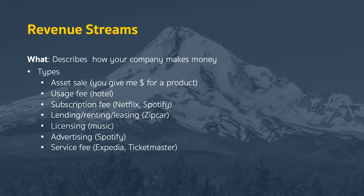Revenue streams is the building block where you describe how your company actually makes money. Types of revenue streams include: asset sales, where you charge money and deliver a product; usage fees, like a hotel charging per night; subscriptions, like Netflix or Spotify charging monthly; lending, renting, or leasing, like Zipcar; licensing, which often applies to intellectual property like music; advertising; and service fees, like Expedia or Ticketmaster charging a fee for servicing a ticket. You can have more than one revenue stream — Spotify charges a subscription fee but also has advertising for its free version.